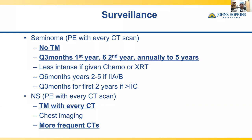For surveillance after treatment: for seminoma, imaging is Q3 months in year one, Q6 months in year two, and annually for five years — just tumor markers and CT scan, with chest X-rays as needed. For non-seminomatous germ cell tumors, surveillance requires tumor markers with every CT scan and more frequent imaging — Q3 months for approximately three years.